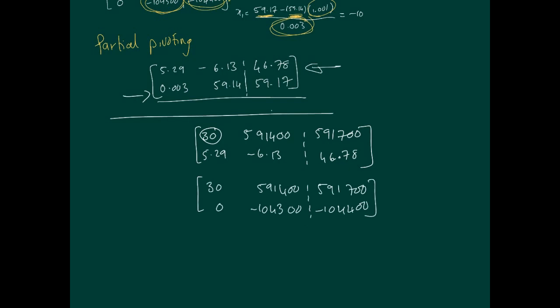If we do that, when we reduce the matrix, Gaussian elimination leads to this reduced matrix. Again notice these large two numbers. If I solve this by back substitution, x2 is approximately 1.001 again, and that will lead to x1 being approximately minus 10. The same problem occurs, so partial pivoting doesn't seem to work.